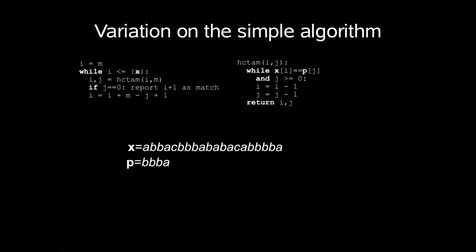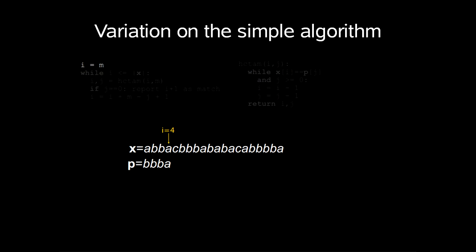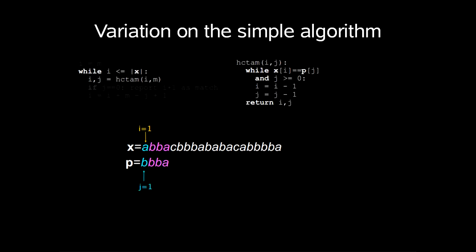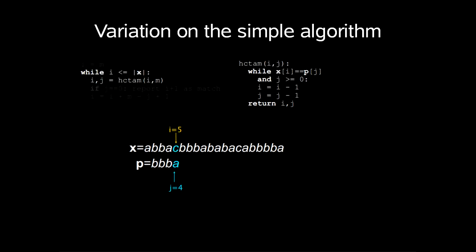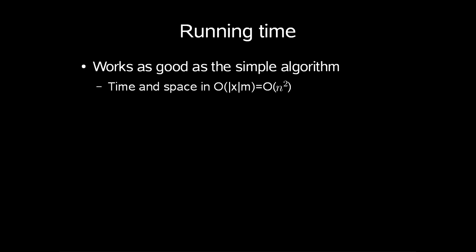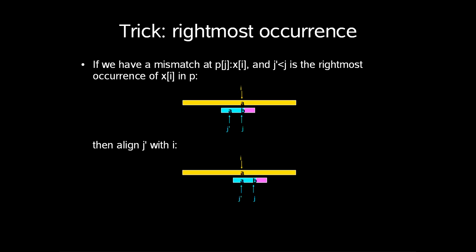Let's now look at a variation on the simple algorithm. In this example, we start setting the index i to the pattern length and match backwards. Next, we increase i and continue matching. This works as good or bad as the simple algorithm, which is time and space of length of x times m, order n squared. But if we introduce a couple of tricks, we might achieve something.